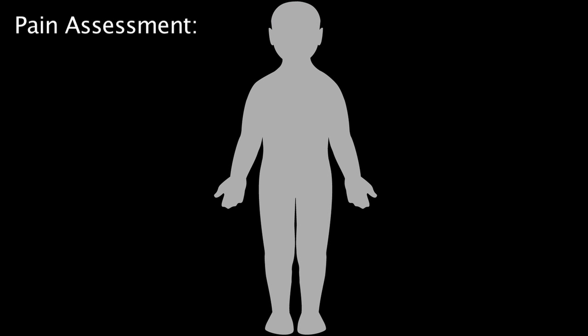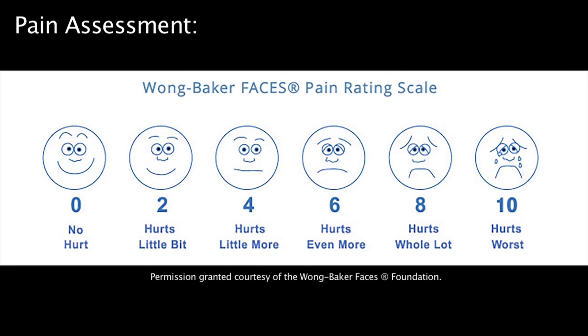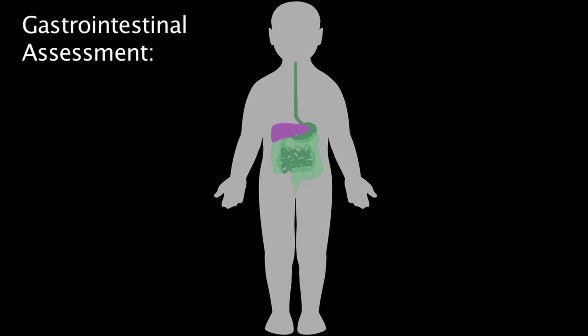In order to identify pain while the patient is anesthetized, vital signs should be monitored. Increased heart rate and blood pressure could indicate pain. Once the patient moves, developmentally appropriate pain scales, if available, are used to score level of pain in response to treatments. Assessment of the gastrointestinal system includes measuring the patient's abdominal girth over the umbilicus, assessing bowel sounds, and palpating for liver enlargement.